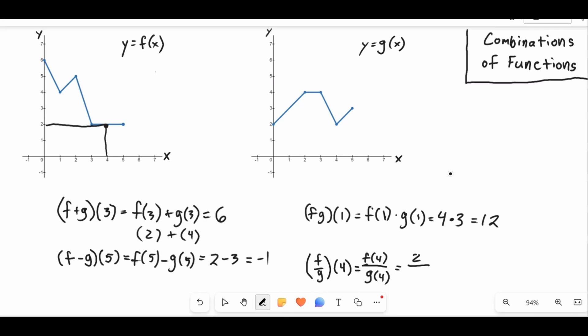And g(4), we'll go to g(4) here, and it looks like that is also 2. And so it's 2 over 2, so that's 1. And so f over g of 4 is equal to 1.